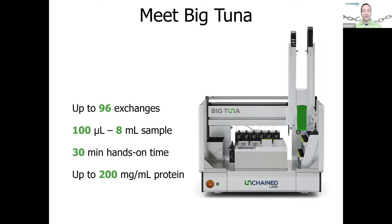Big Tuna will allow you to do up to 96 simultaneous buffer exchanges. You can work at low volumes — as low as 100 microliters of sample — up to as much as 8 mils per well. You can use multiple wells for a single protein. Setup time is less than 30 minutes to get your experiment designed, prepare your deck, and then leave. It works with a wide variety of protein concentrations, from sub 1 mg/mL all the way up to about 200 mg/mL of IgG.